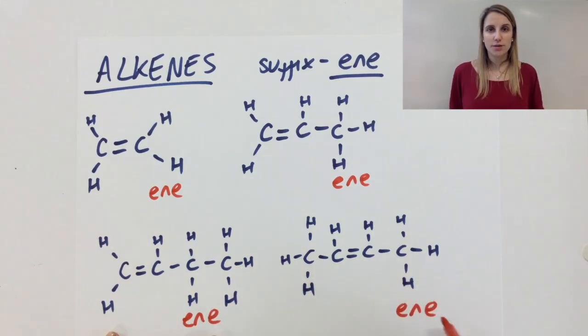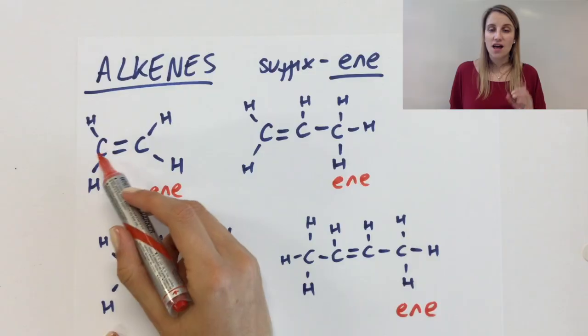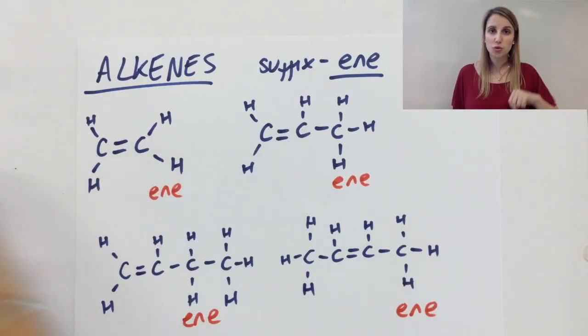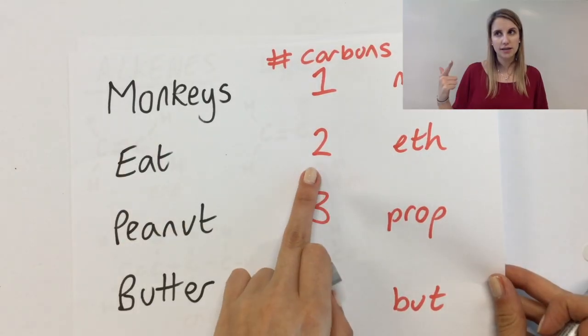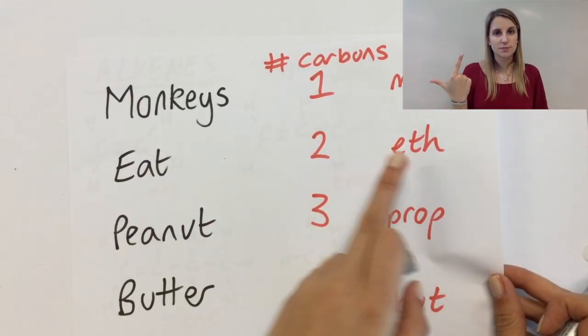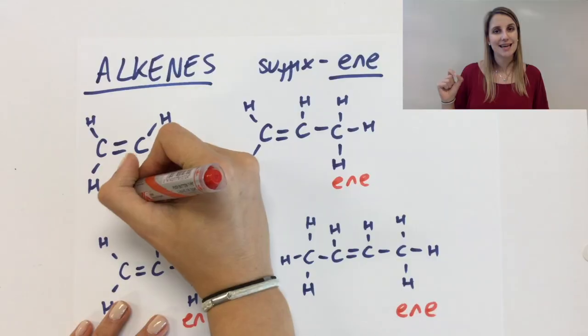The second thing we're going to do is look at the number of carbons. This first one has got two carbons. So that means that if I look back to my monkey's eat, two carbons means it must be eth. So this becomes eth-ene.